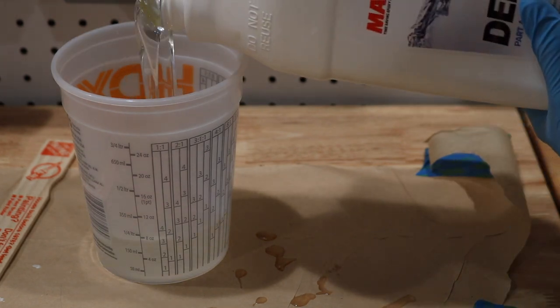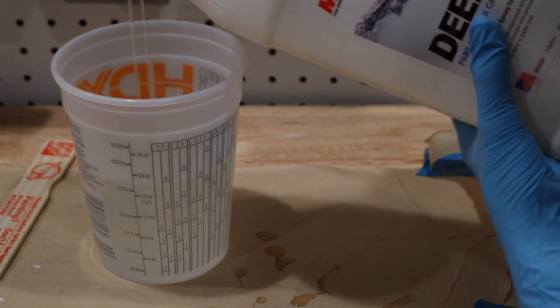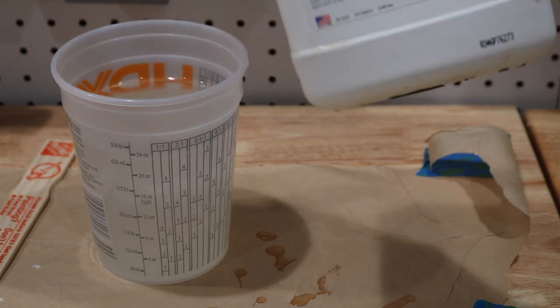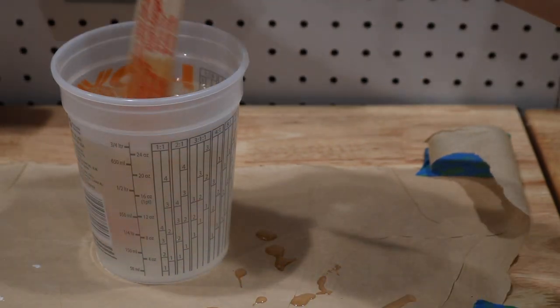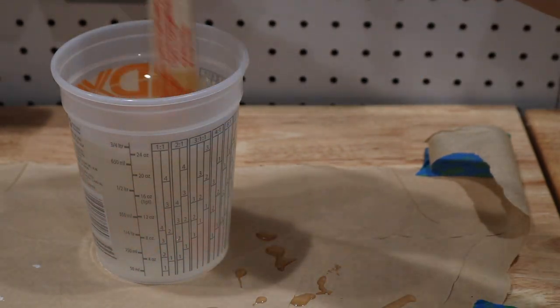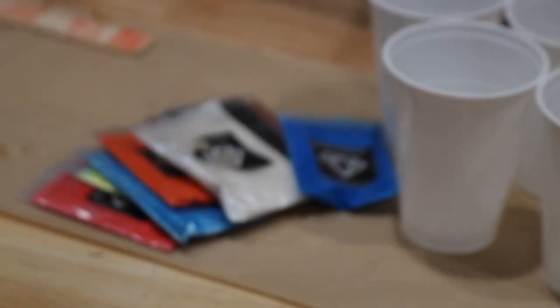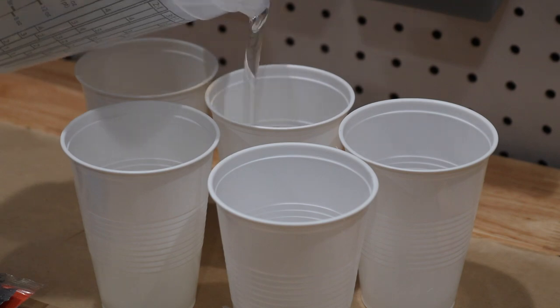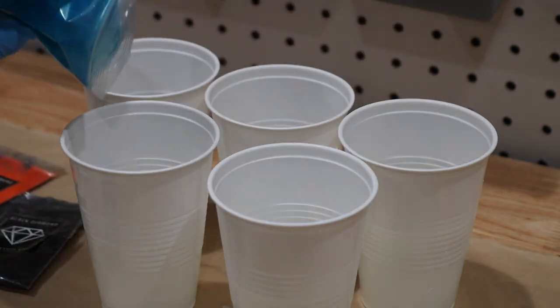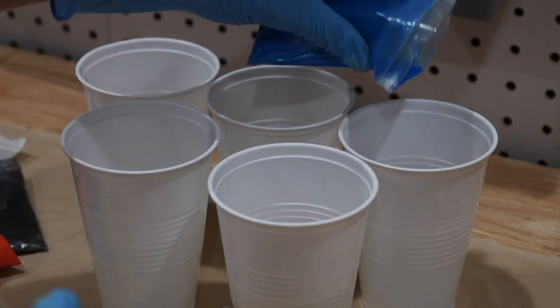Next, we mixed up our own batches of deep pour epoxy, which I had left over from some other projects, and then after mixing them thoroughly, divided them into smaller cups, where we then used different color metallic pigments in these cups to create different color combinations. Now, I've only ever poured one color epoxy in my epoxy resin project, so it was really fun to get to experiment with some different colors on this one.